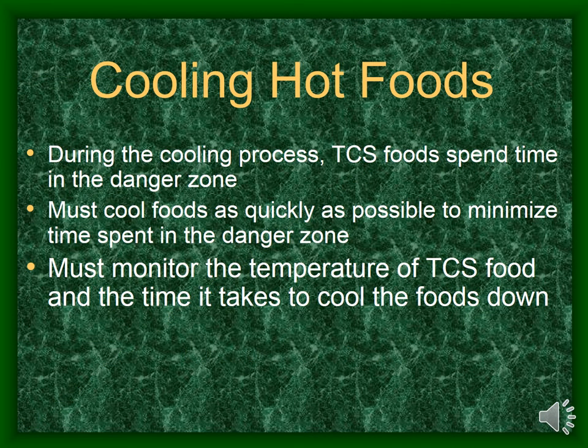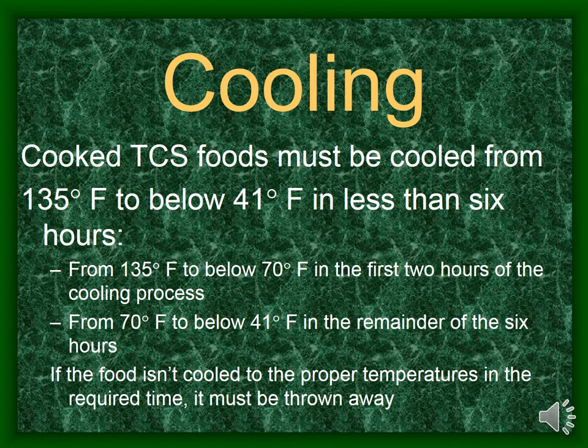The next food preparation process is the cooling of hot foods. During the cooling process, TCS foods spend time in the danger zone. You must cool foods as quickly as possible to minimize this time. You must monitor the temperature of TCS foods and the time it takes to cool them down. The correct cooling process involves cooling cooked TCS foods from above 135 degrees Fahrenheit to below 41 degrees Fahrenheit in six hours or less, as long as the food goes from 135 to below 70 degrees Fahrenheit in the first two hours. You then have the remainder of the six hours to go from 70 degrees Fahrenheit to below 41 degrees Fahrenheit. If the food isn't cooled to the proper temperatures in the required time, it must be thrown away.